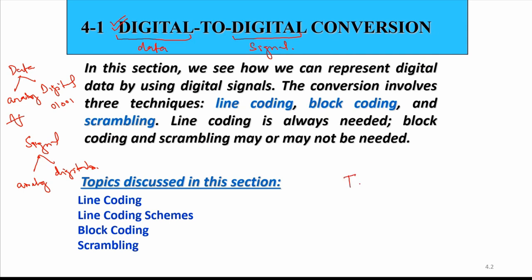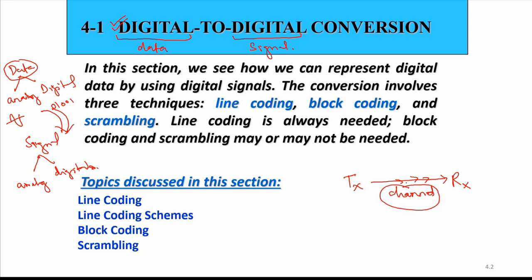While transmitting a signal, we have a transmitter or sender and a receiver, with a channel in between. Whenever we are sending data from the transmitter to the receiver, the data needs to travel through the channel, which must be able to carry that data. Signals can travel through conductors, medium, or the channel.